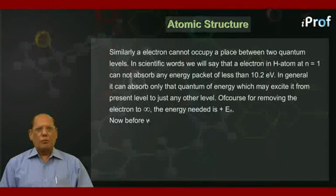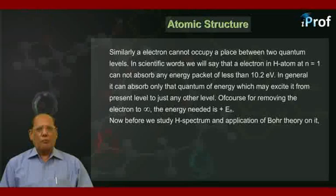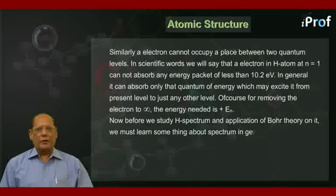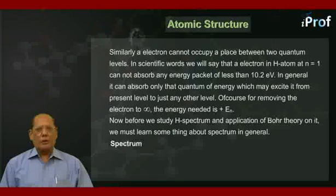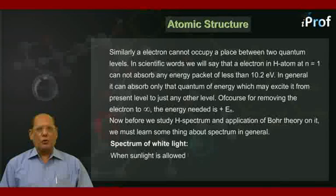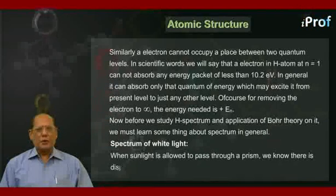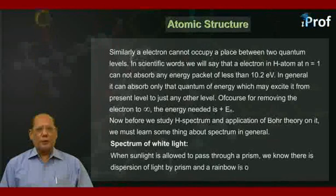Now, before we study hydrogen spectrum and application of Bohr theory on it, we must learn something about spectrum in general. So, first of all, we have a spectrum of white light. When sunlight is allowed to pass through a prism, we know there is dispersion of light by prism and a rainbow is obtained.